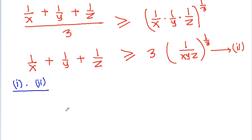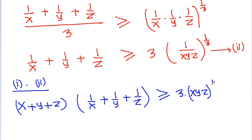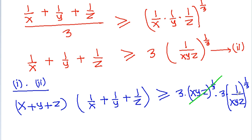If we multiply equation 1 and equation 2, then we get (x + y + z)·(1/x + 1/y + 1/z) ≥ 3·(xyz)^(1/3) × 3·(1/(xyz))^(1/3). The terms (xyz)^(1/3) and (1/(xyz))^(1/3) cancel out.